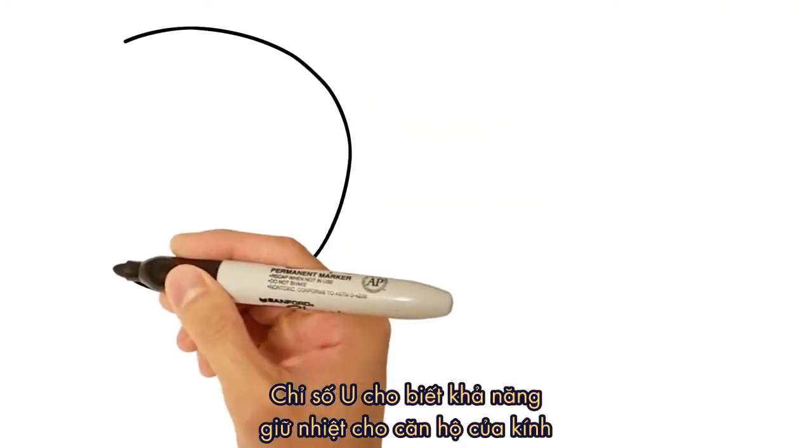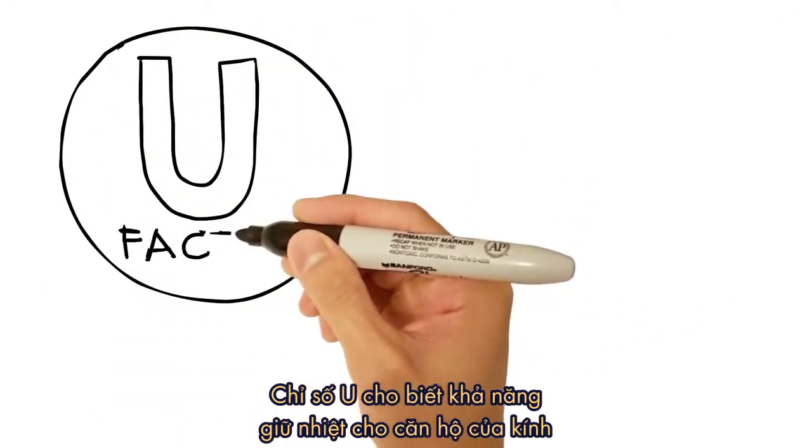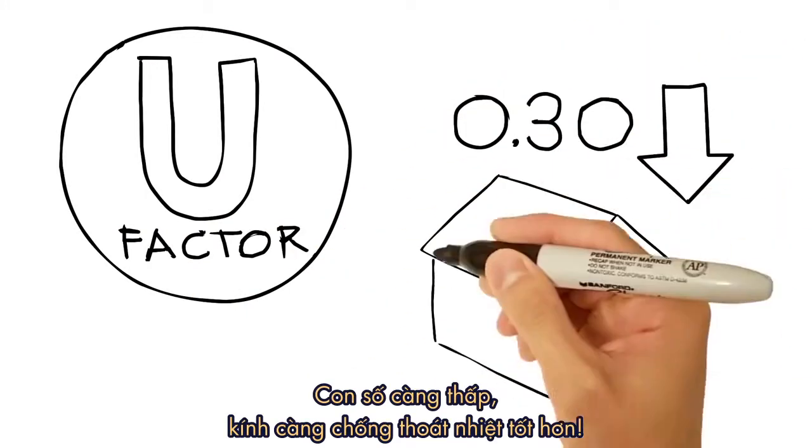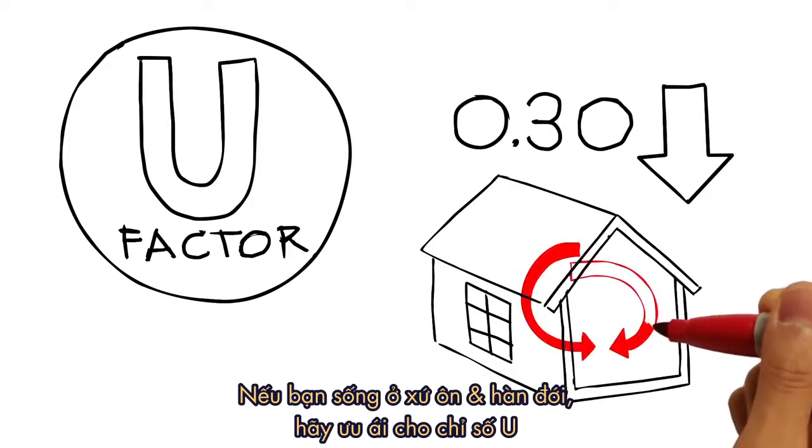U-factor measures how well a window keeps heat inside your home. The lower the number, the more a window resists heat loss. If you live in a cold weather climate zone, you're going to want a low U-factor.